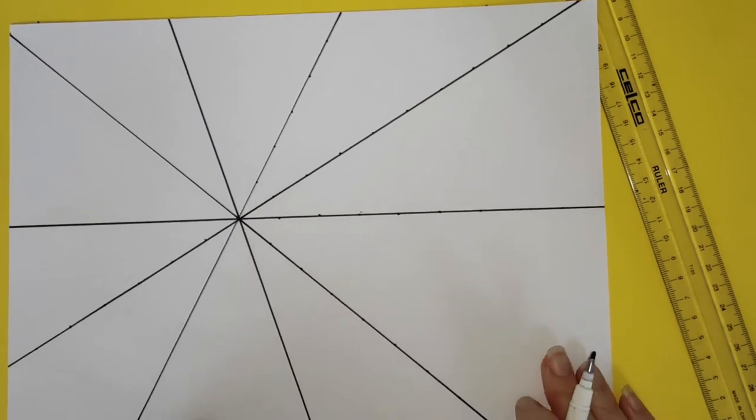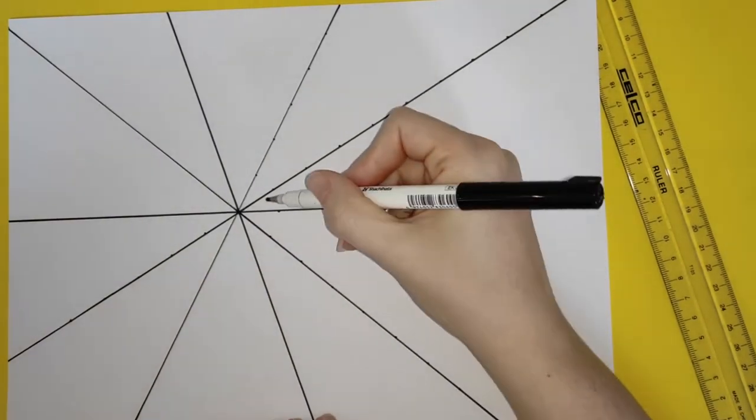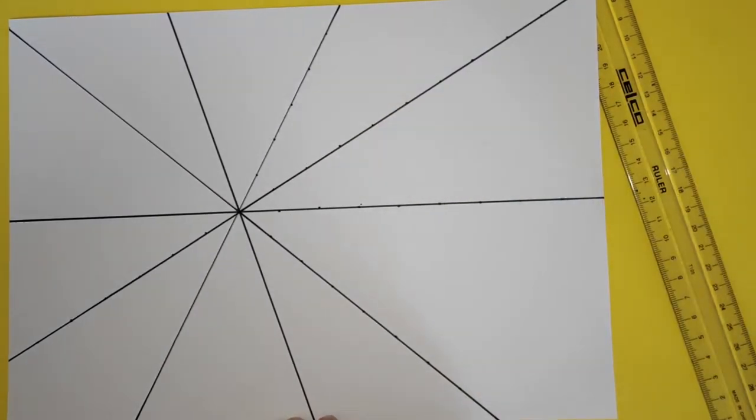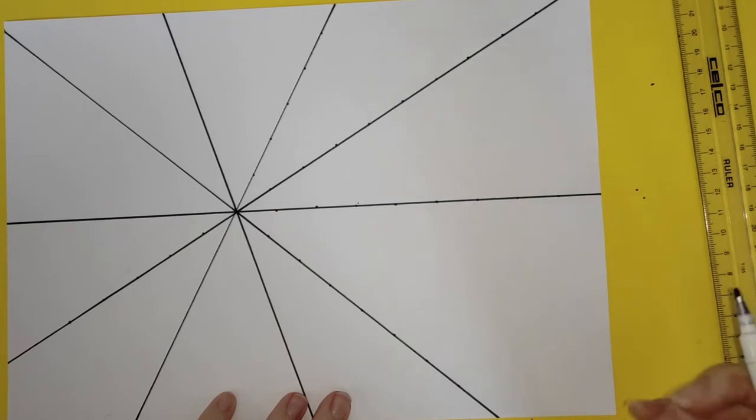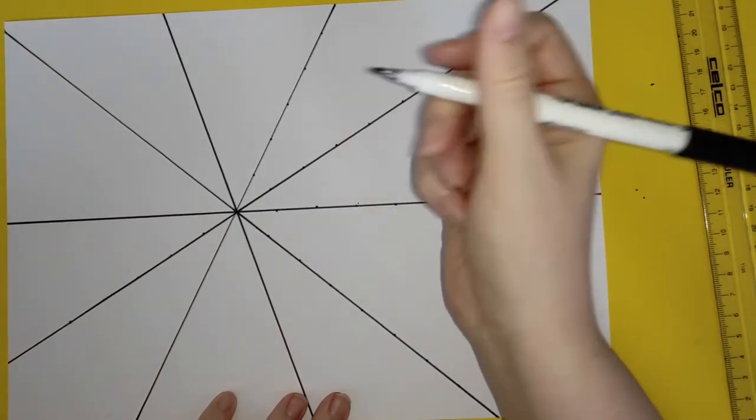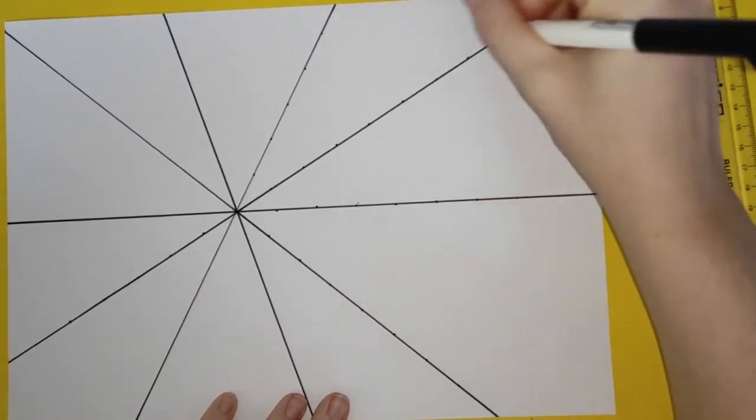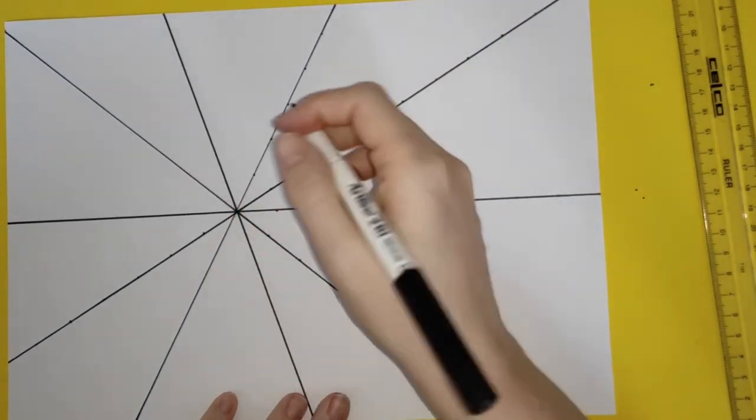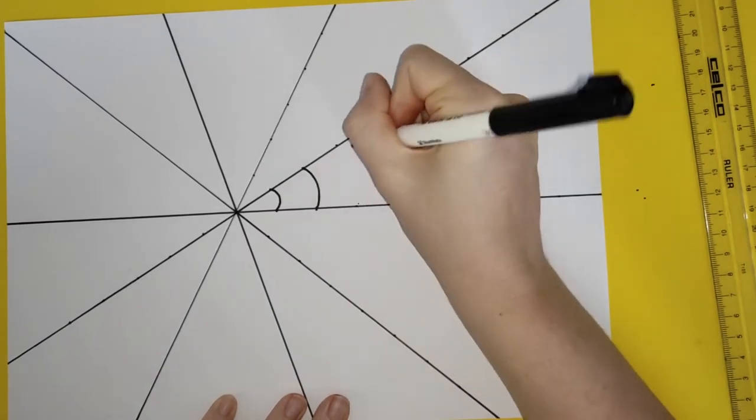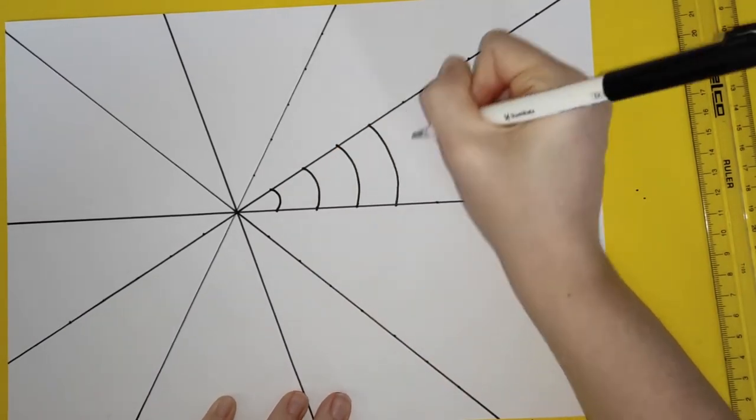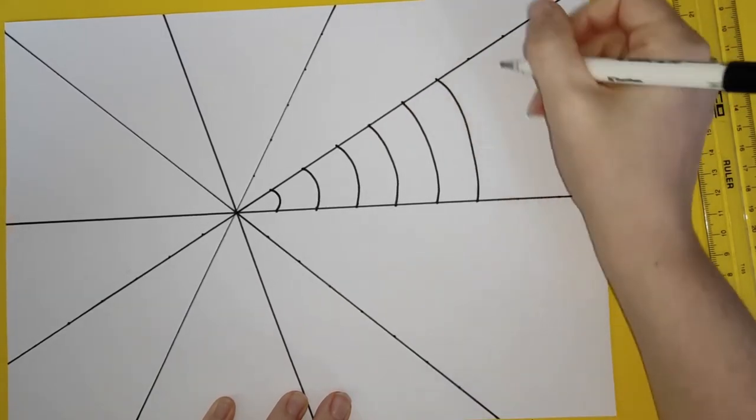Alright, from there what we're going to do is connect up these dots, but we're not going to use straight lines. We're going to use a bit of a curved line to do it. So the first line I'm going to do, I'm going to curve back this way, so away from the focal point like that. And just keep going until I have done all of them.